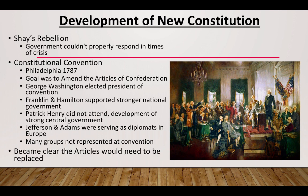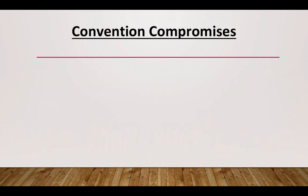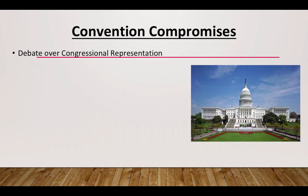It became clear that the Articles would need to be completely replaced. Some convention compromises — you need to know all of them. A compromise is when two sides get together and agree upon an issue. The first focuses on the debate over congressional representation: how would states be represented in Congress?